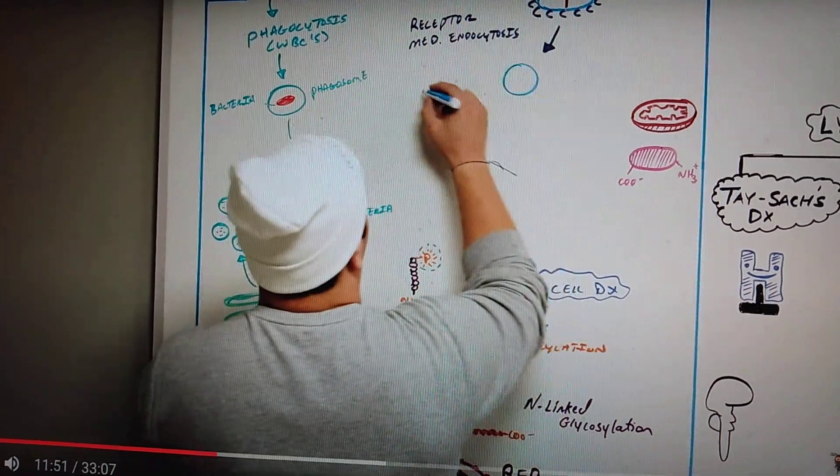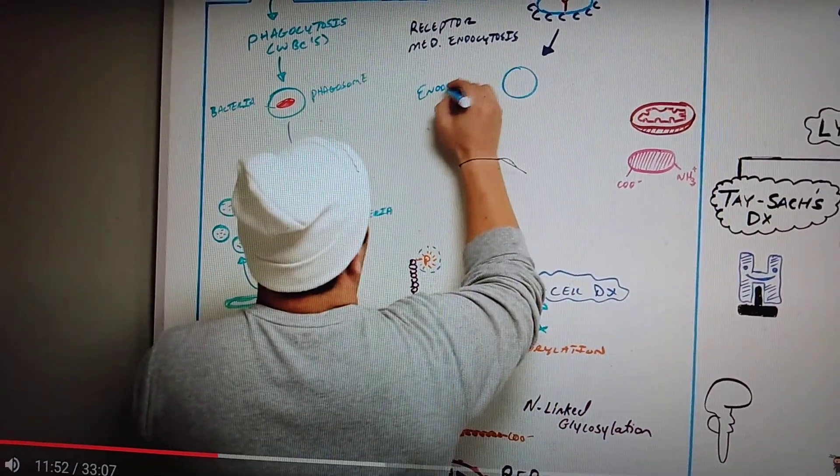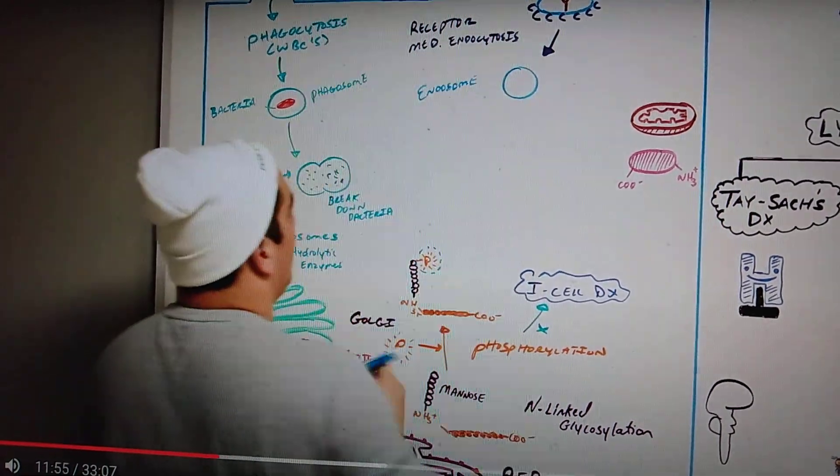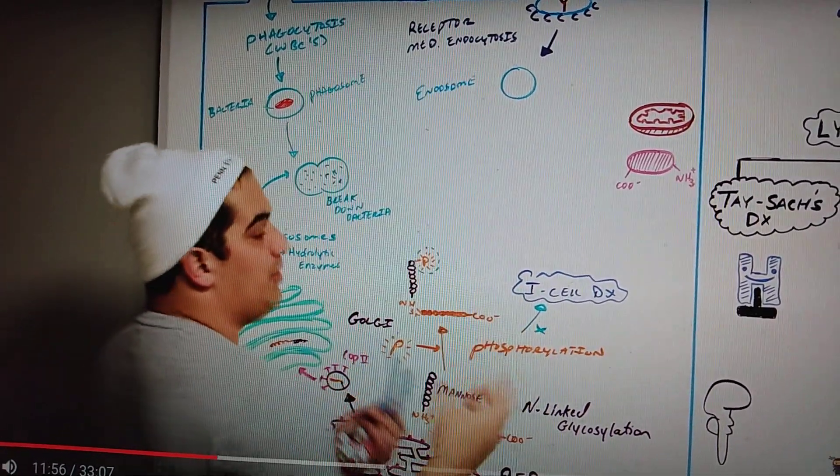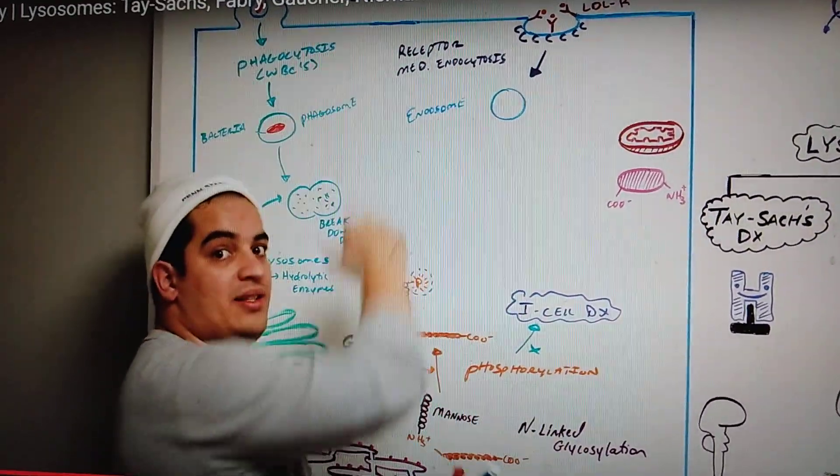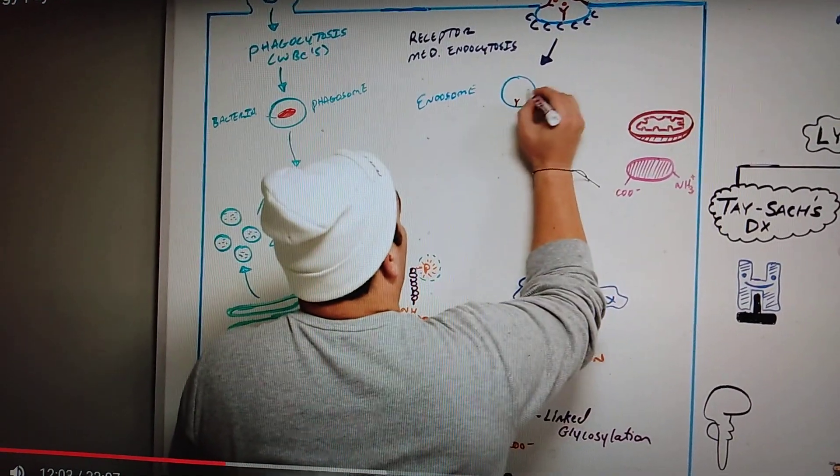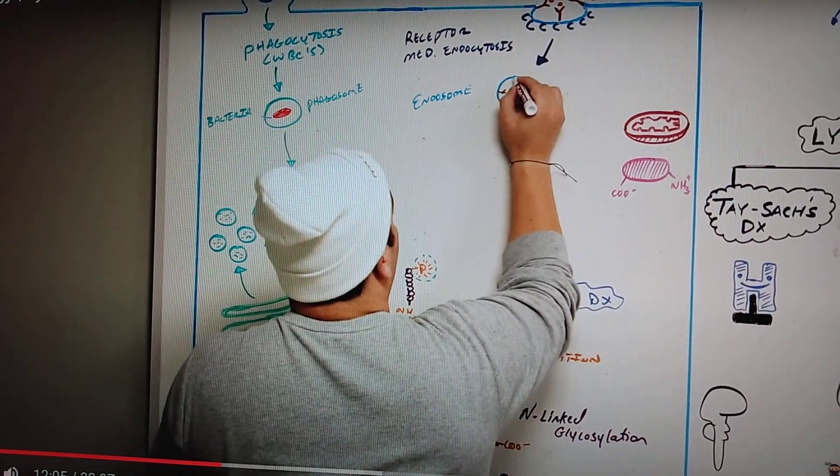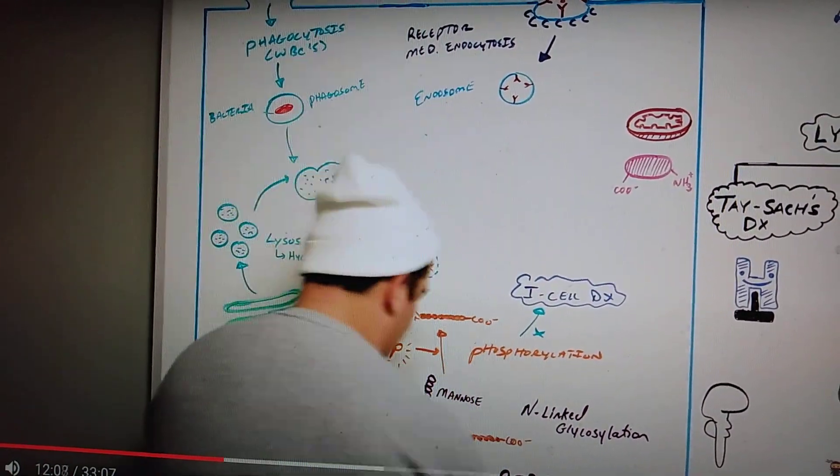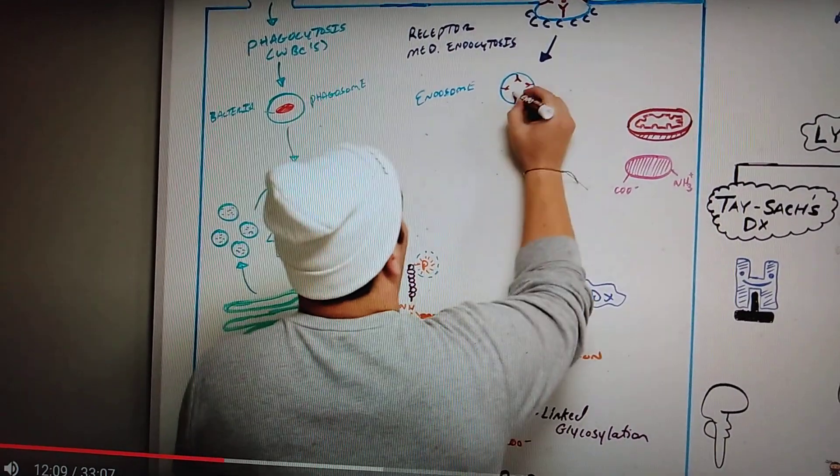And that vesicle is actually going to be called an endosome, that's what we like to call it. An endosome, just like a phagosome is an endosome which is a special name from the process of phagocytosis. What does the endosome contain within it? It has the LDL receptors and then it also has the LDL molecules bound to it.